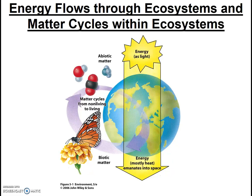On the other hand, matter cycles within ecosystems. In fact, the materially closed Earth system has essentially the same amount of water, carbon, nitrogen, and phosphorus today as it did a million years ago, and it will have the same amount a million years into the future. The law of conservation of matter states: matter is neither created nor destroyed, but it does change form.